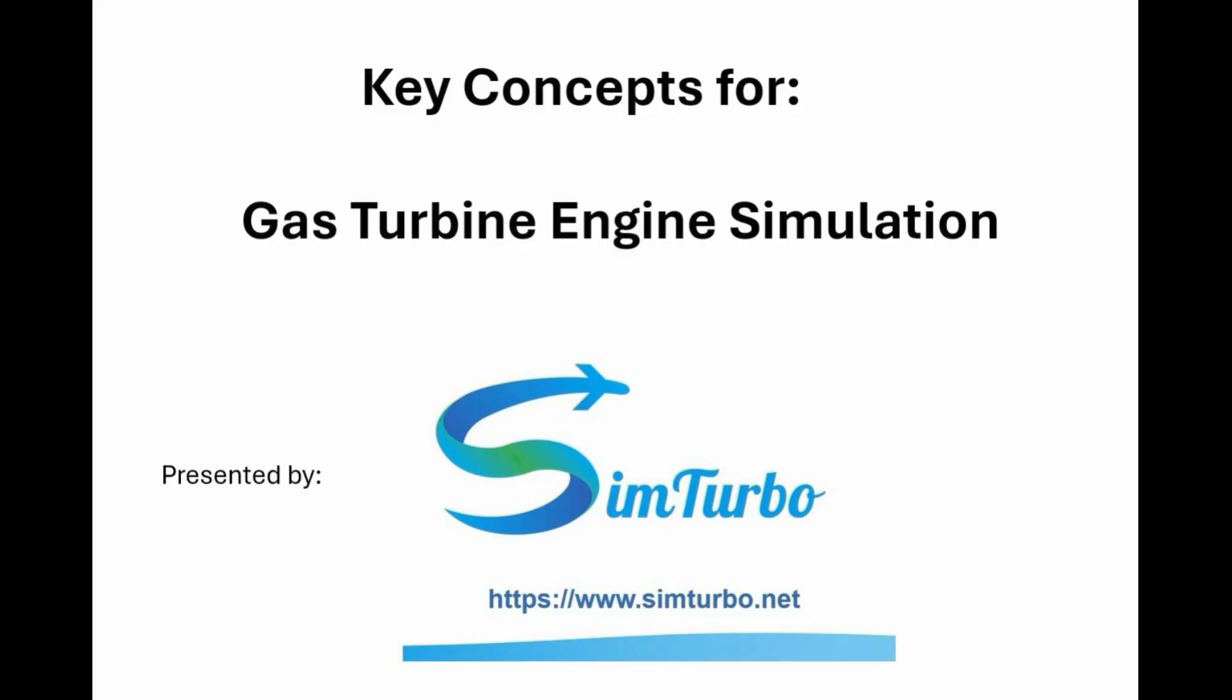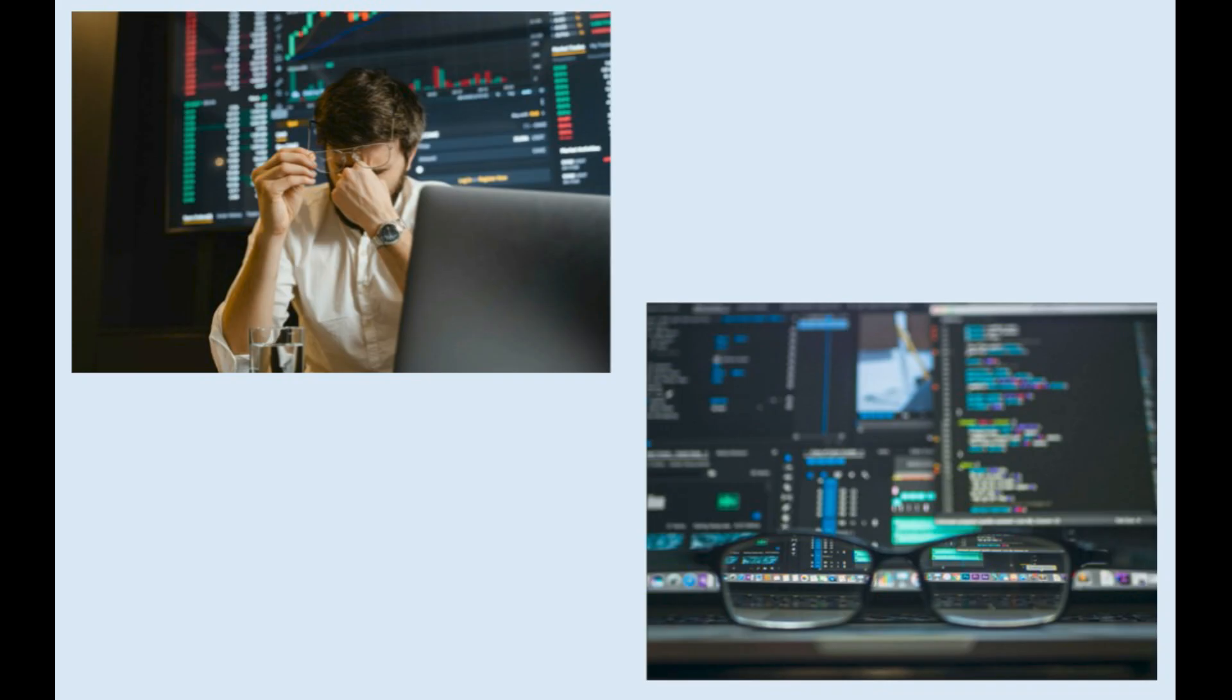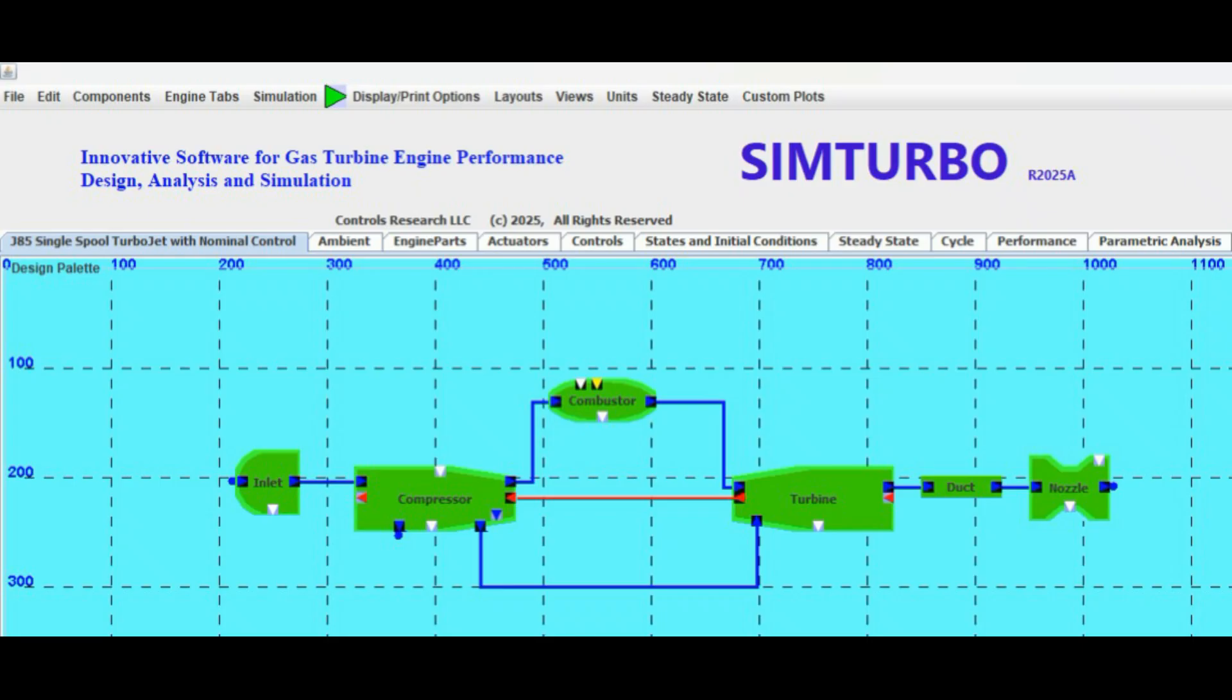It really boils down to a fundamental trade-off, doesn't it? You've got your super detailed 3D analysis, CFD computational fluid dynamics - the fancy stuff. It gives you incredible detail, but it can take days, sometimes weeks on a supercomputer. Which is just no good for the early design phase. When engineers need to churn through maybe thousands of different concepts, that's where zero-D and one-D models come in. They give you calculations almost instantly. They're essential for managing risk early on.